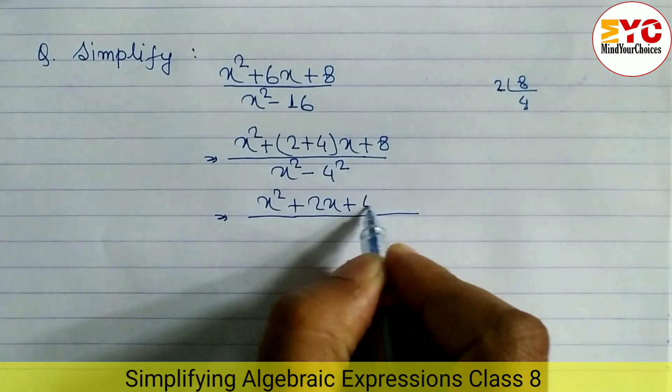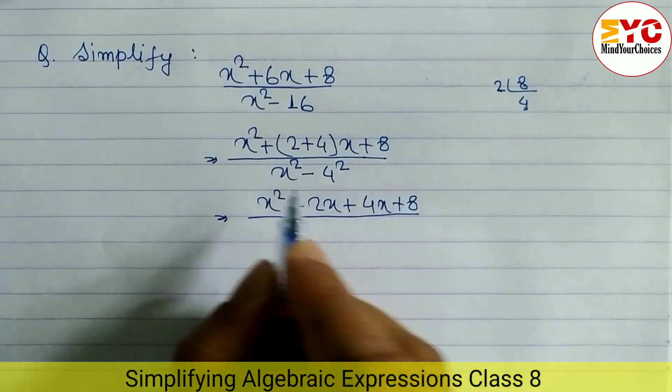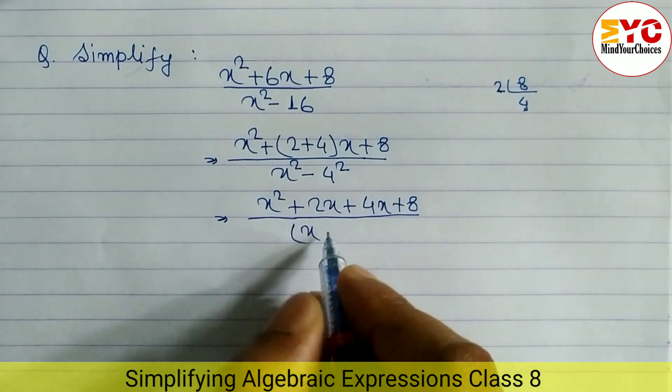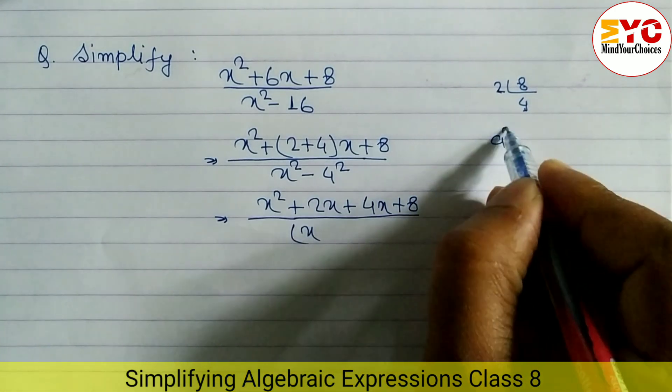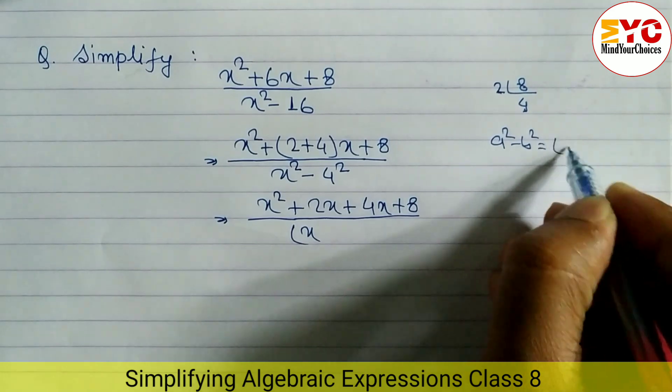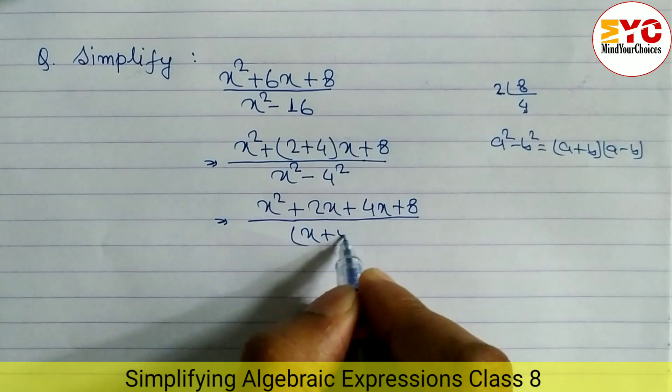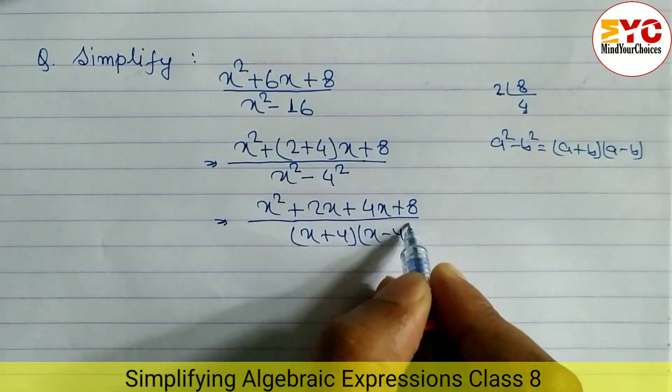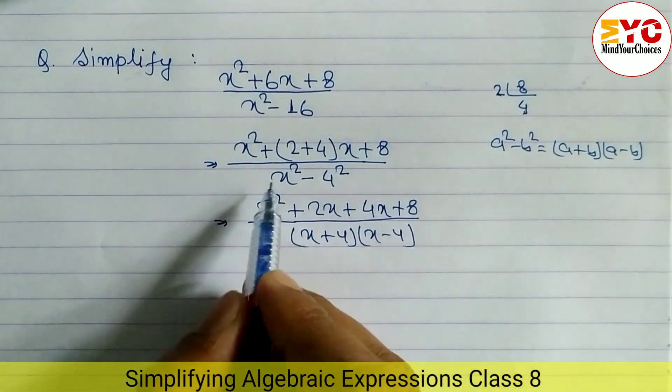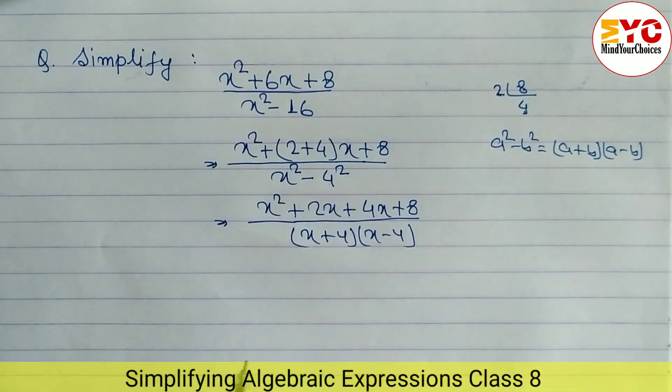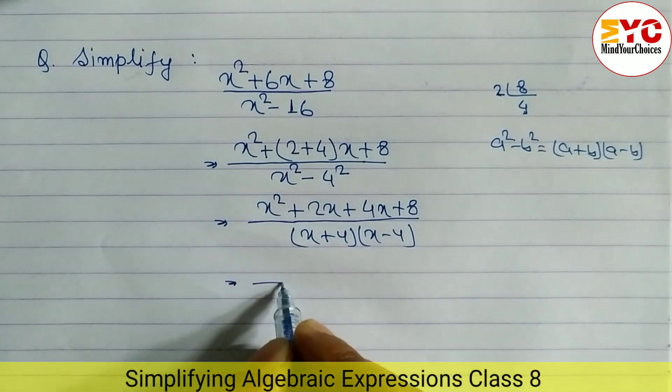In the denominator you can see it's in the form of a² - b², so we can write (a+b)(a-b). We have the formula a² - b² = (a+b)(a-b). So we have to write here (x+4)(x-4), in the place of a here is x and in the place of b here is 4.